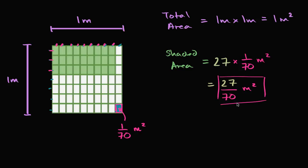But I want to appreciate that there are multiple ways we could have tackled this. Another way would be to figure out what the dimensions of the shaded area are. For example, what is the height of just the shaded area? It's going to be a fraction. Well, if we're going in the vertical direction, we've divided this one meter into seven equal sections.